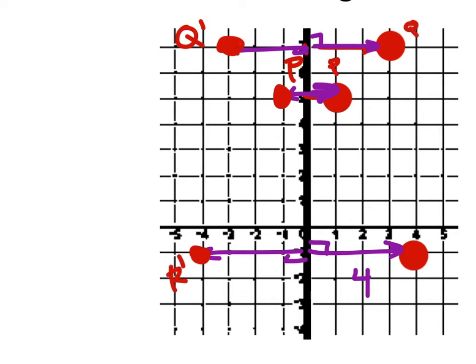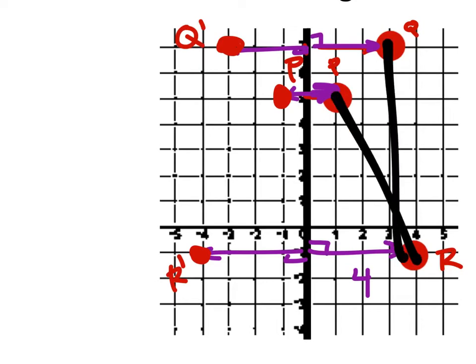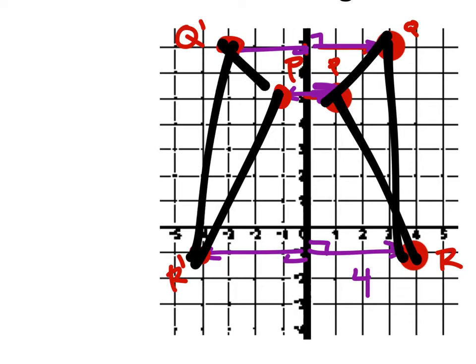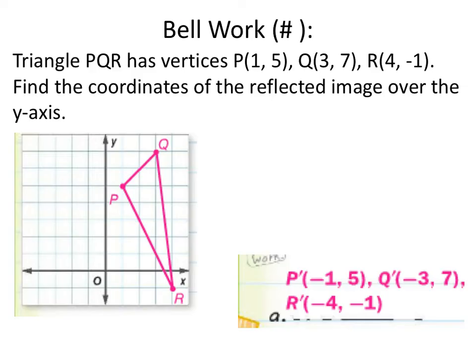Now we can label these points P, Q, R and connect them with lines. There are the coordinates right there.